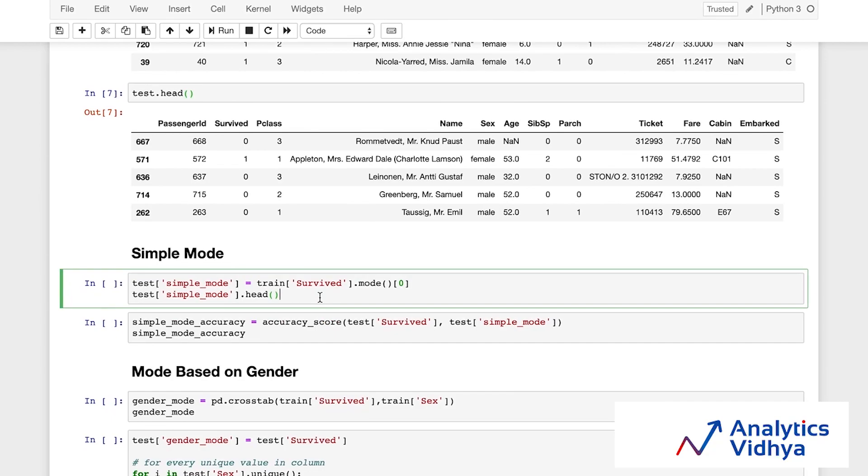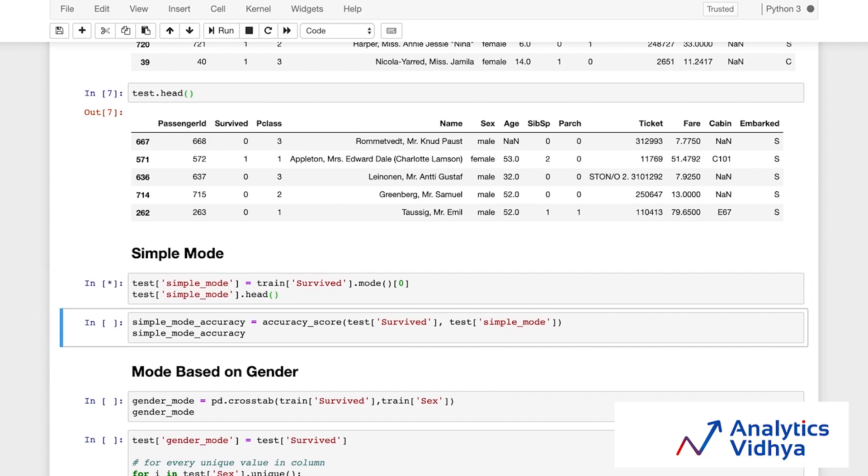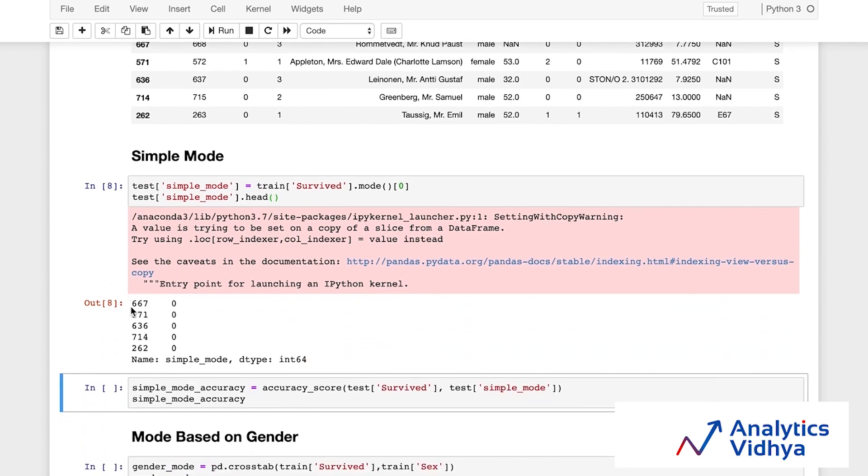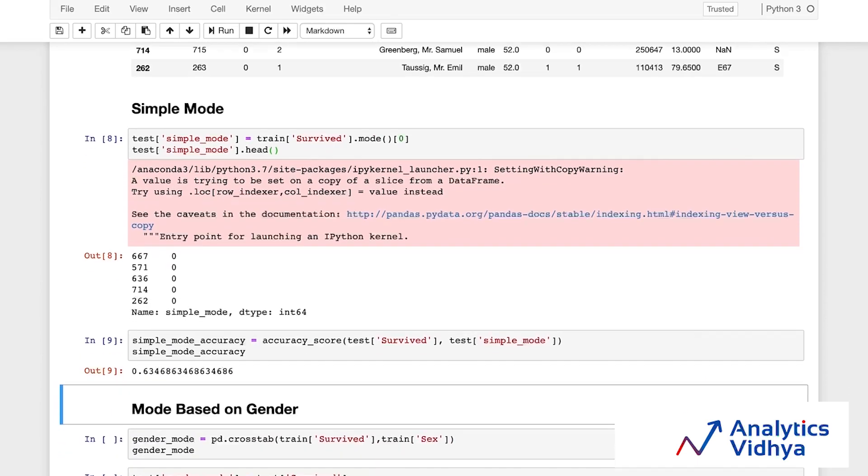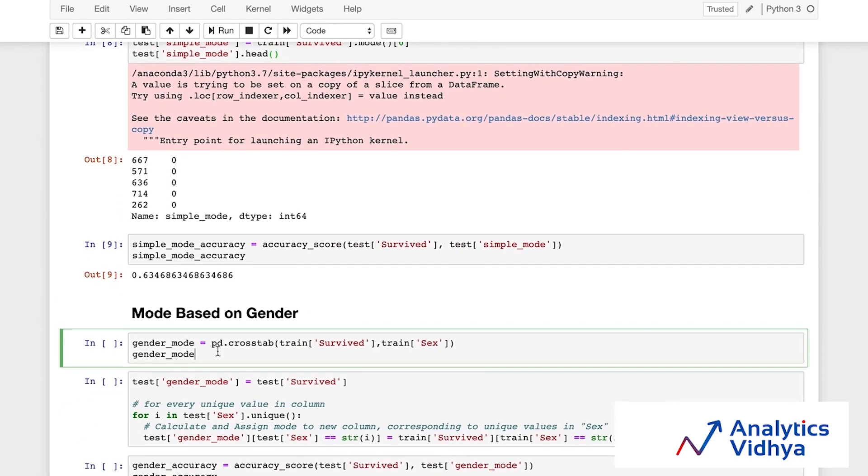Let's start by putting simple mode as our prediction. I'll create a column simple mode equals train and just take the mode of the survived column. Let's look at the head. What it says is that the mode was zero for all the people. Most of the people actually ended up dying. That would be my base prediction. That gives me 63% accuracy in this particular model.